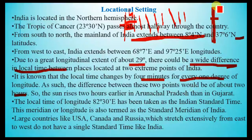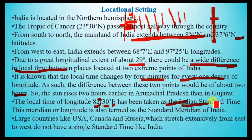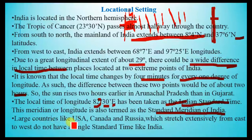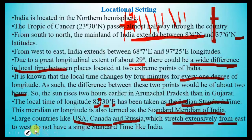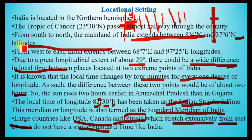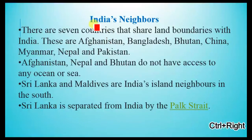The sunrise is two hours earlier in Arunachal Pradesh than in Gujarat. The local time of longitude 82°30' E has been taken as the Indian Standard Time to avoid conflict. Large countries like USA, Canada, and Russia are stretched extensively from east to west, so they have multiple time zones. For example, Russia has five time zones.